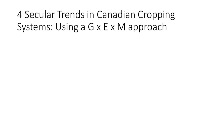The next part of this lecture will cover four broad secular trends that are shaping Canadian cropping systems, using a G by E by M approach. By secular trends, I mean long-term trends that are not cyclical, not seasonal — they're long-term consistent trends shaping Canadian cropping systems. From year to year, fluctuations in crop prices will affect cropping system diversity, but these are major secular trends that have been going on for 40 years or more.